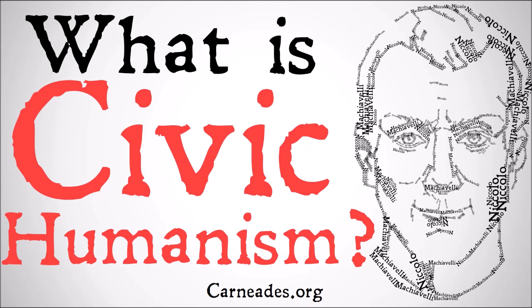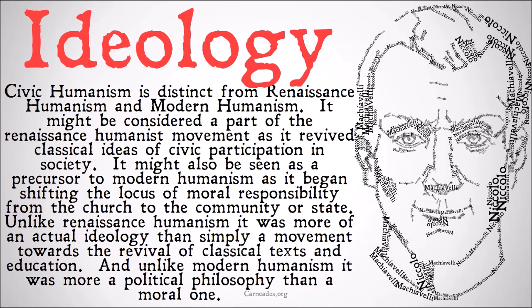Civic humanism is distinct from renaissance humanism and modern humanism. It might be considered part of the renaissance humanist movement as it revived classical ideas of civic participation in society and civic investment in the goods of society and collective goods. It might also be seen as a precursor to modern humanism as it began shifting the locus of moral responsibility from the church to the community or state. But unlike renaissance humanism, it was more of an actual ideology than simply a movement toward the revival of classical texts and education. And unlike modern humanism, it was more of a political philosophy than a moral one.